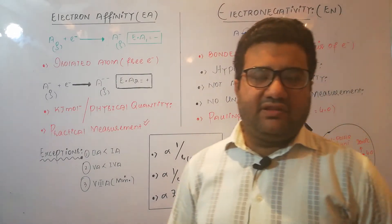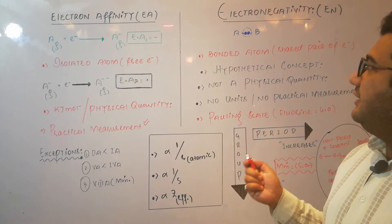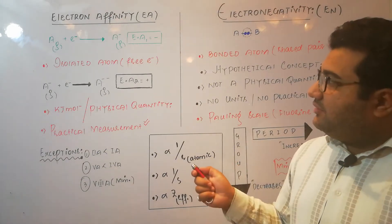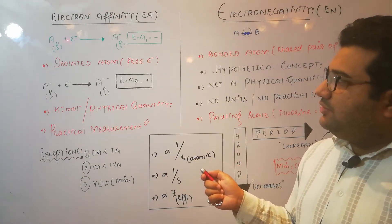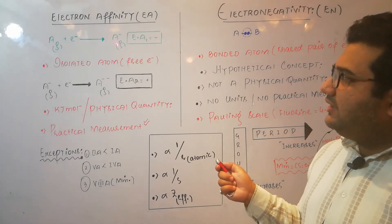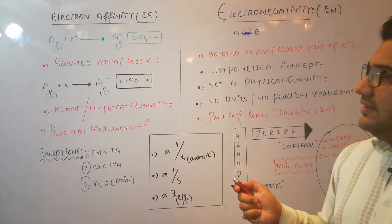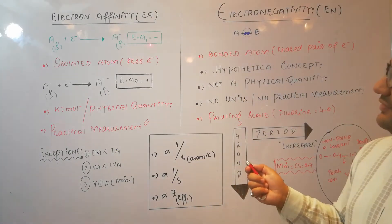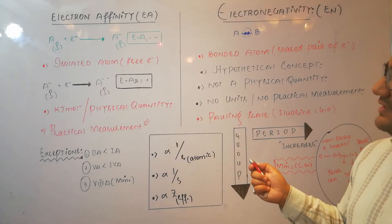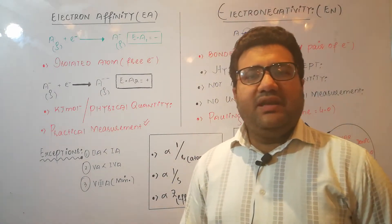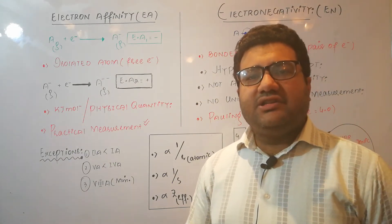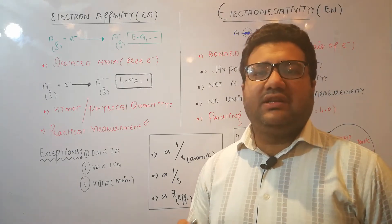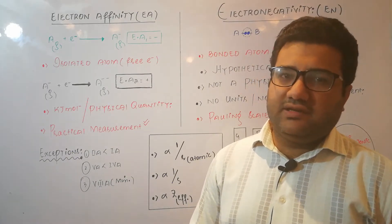However, there is a significant difference between these two terms. Electron affinity is the ability of an isolated gaseous atom to attract an electron and form a uninegative gaseous ion. Because the formation of a uninegative gaseous ion is an exothermic process, the first electron affinity always carries a negative sign. Electron affinity is the amount of energy released when an electron is added to the valence shell of an isolated gaseous atom in its ground state.